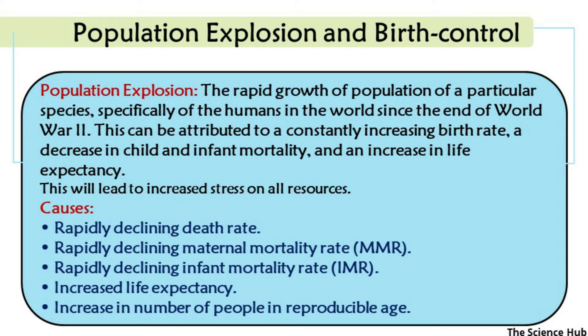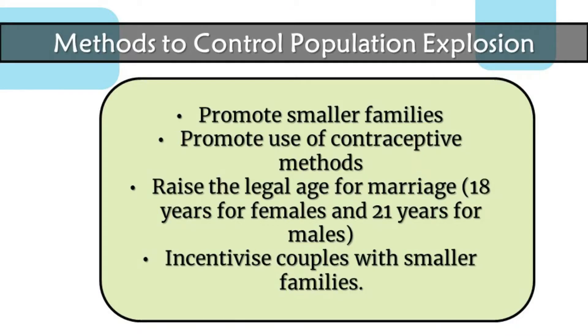Causes of population explosion include: a rapidly declining death rate, rapidly declining maternal mortality rate (MMR), rapidly declining infant mortality rate (IMR), increased life expectancy, and an increase in the number of people of reproductive age. Various methods are needed to control this population explosion.